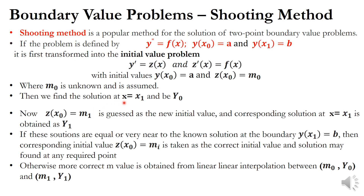So we assume it. After assuming this m0 value — we already know a — we find the solution at x equal to x1. We know the exact solution at the second boundary is y of x1 equal to b. Using these initial values including the assumed m0, we find the solution at x equal to x1, represented as y0. If y0 is exactly equal to b, then m0 is the correct assumption.